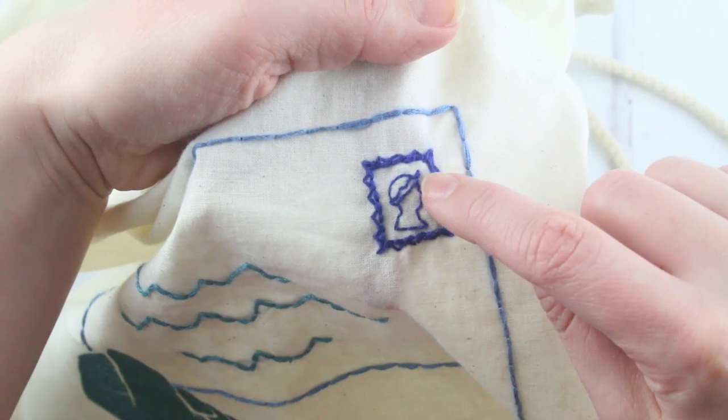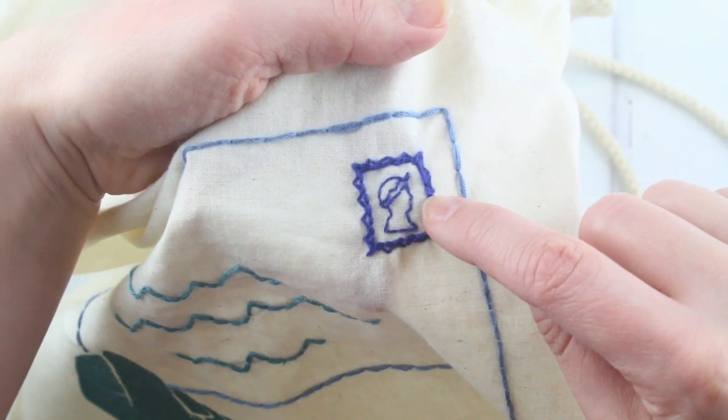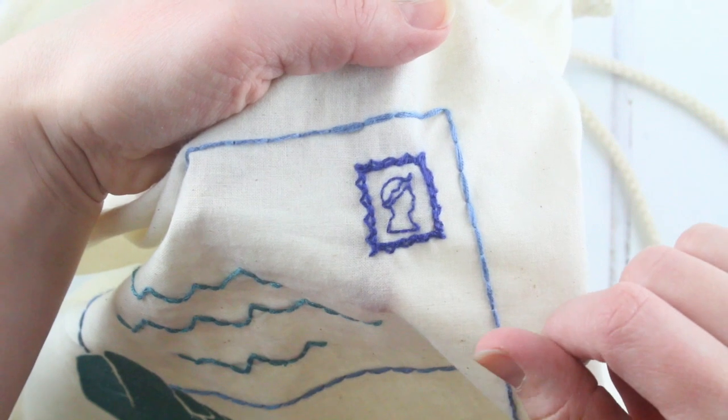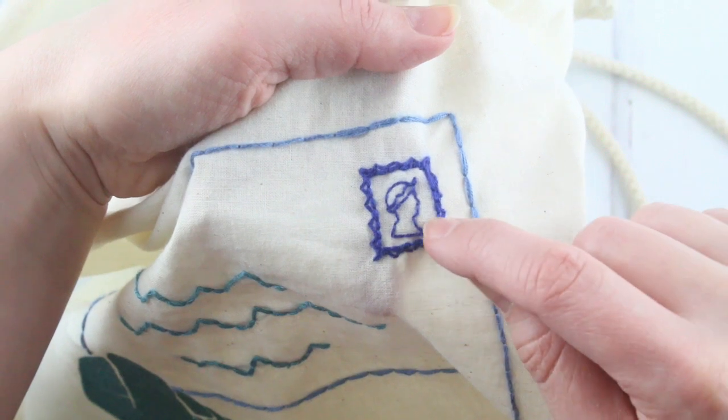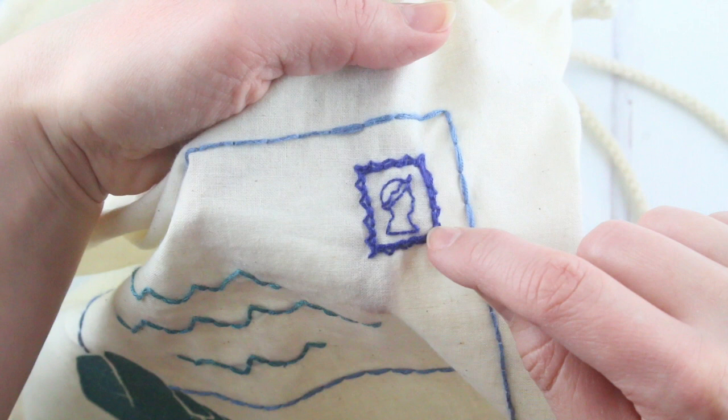For the face, stitch one stitch down from underneath the crown. One stitch out to the right for the nose. Then another stitch back for the underside of the nose. Stitch another stitch straight down for the mouth. Then stitch one stitch further back and left for the underside of the chin. One stitch down for the neck.